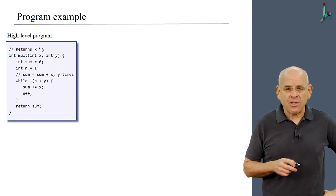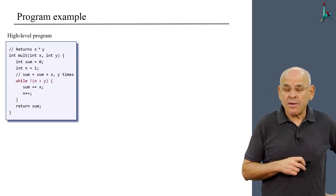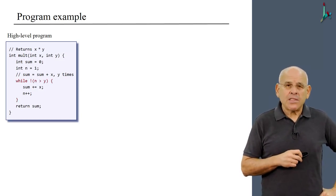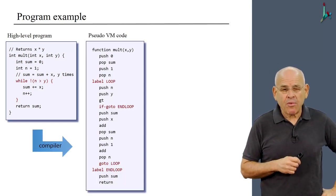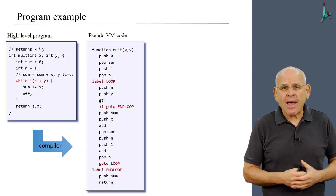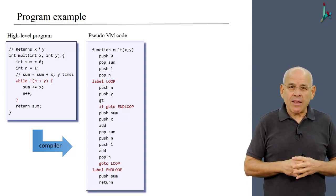So this is our function. And we have this while loop here. And once we compile this high-level code into VM code, the compiler will generate the code that you see on the right-hand side.